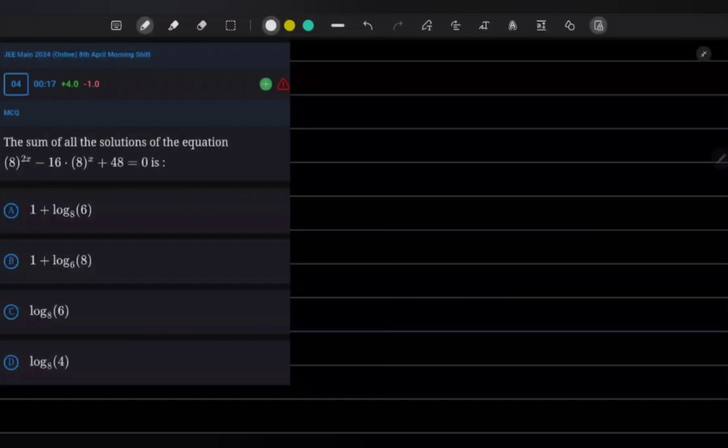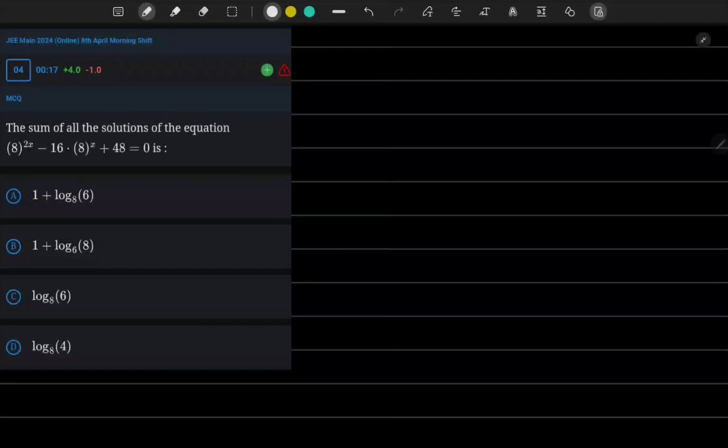The question is: the sum of all the solutions of the equation 8^(2x) - 16·8^x + 48 = 0 is... and here four options are given below as you can observe.